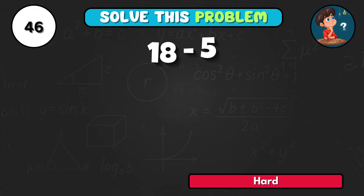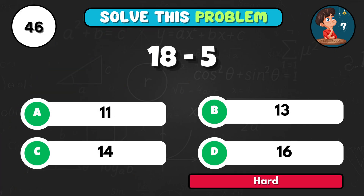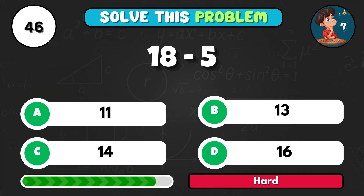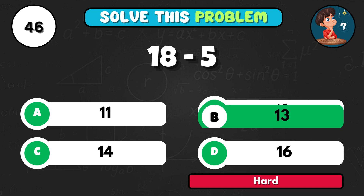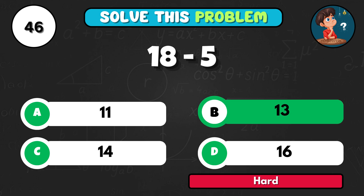18 minus 5 is equal to… The correct answer is B13.